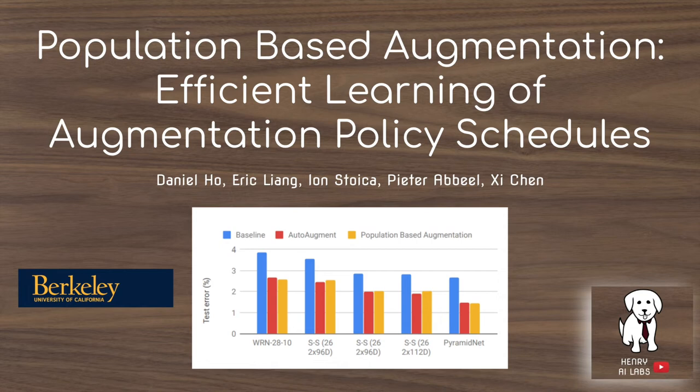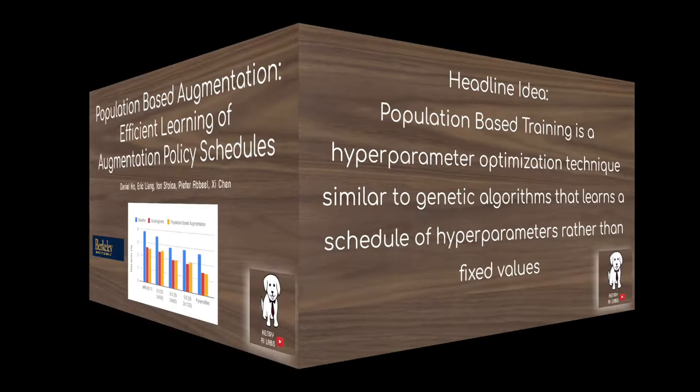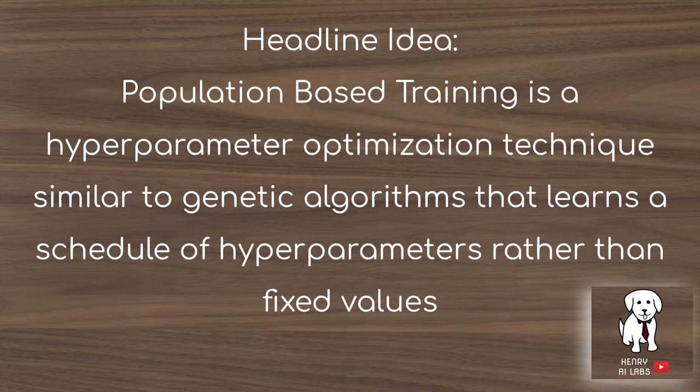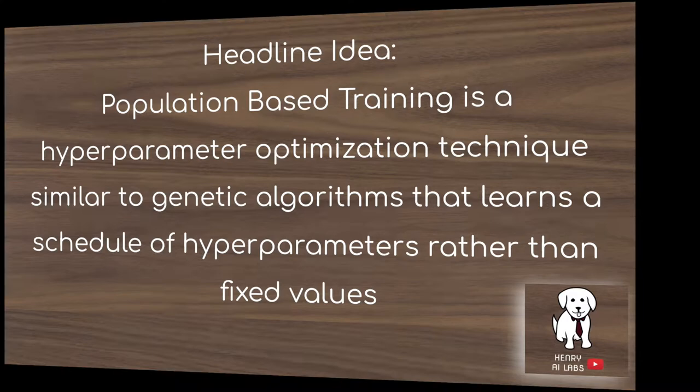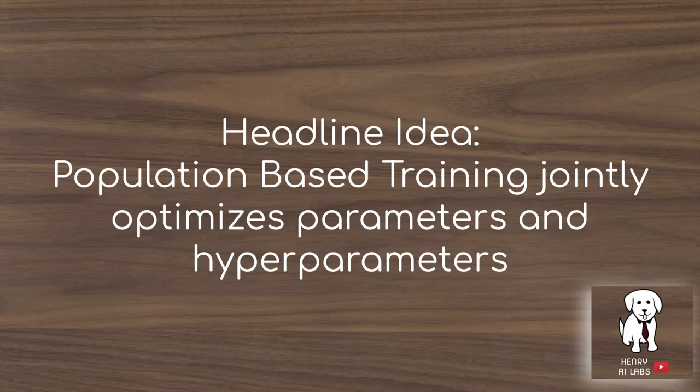In addition to population-based training, we're going to present an application of it in data augmentation — the paper on population-based augmentation: efficient learning of augmentation policy schedules. The headline idea of population-based training is that it's a hyperparameter optimization technique similar to genetic algorithms that learns a schedule of hyperparameters rather than fixed values. Another headline idea is that population-based training jointly optimizes the parameters and hyperparameters, compared to techniques that search for hyperparameters by restarting the model at each hyperparameter evaluation.